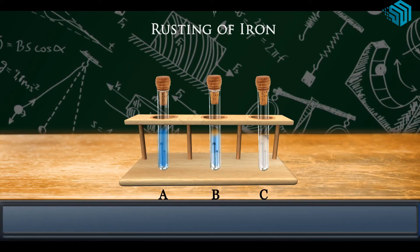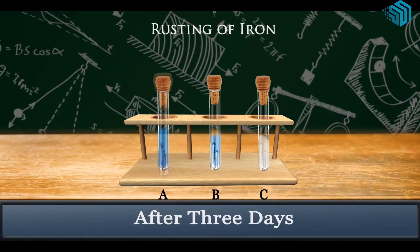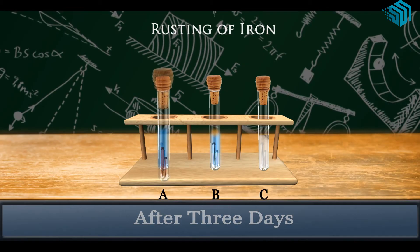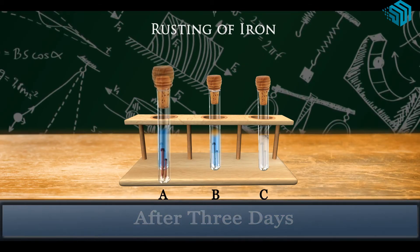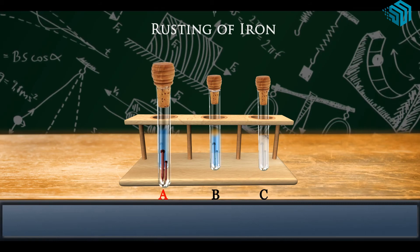Keep these three test tubes aside for two to three days. What we observe is that nails placed in test tube A are rusted because of the presence of air and water.